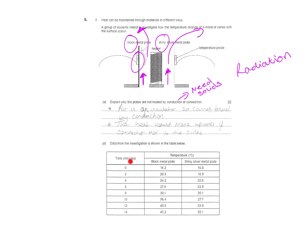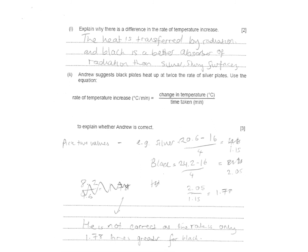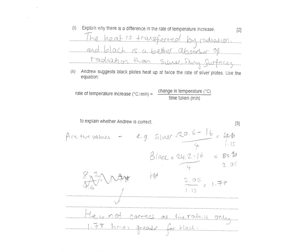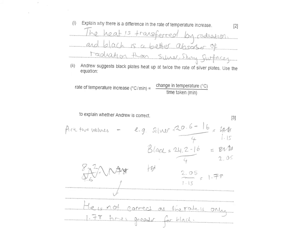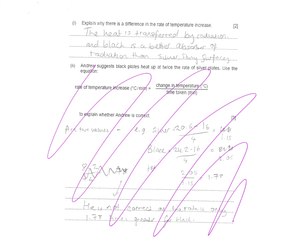Again, data shown collected. A bit more tricky data because it's got decimal places. It's asking you to comment on the data, explain why there's a difference in temperature. The heat is transferred by radiation. Black is a better absorber of radiation as silver and shiny surfaces reflect it. That's why there's a difference in the temperature increases. This kind of question is quite complicated, so I'm going to leave it out. You will not be asked that.